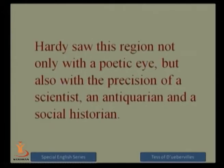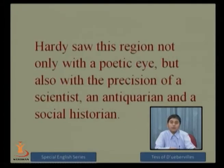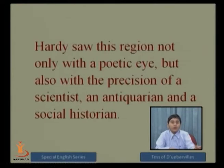Hardy showed this region not only with a poetic eye but also with the precision of a scientist, an antiquarian, and a social historian. These words show us the different points of view taken by Hardy. Whenever Hardy was writing about Wessex, he was not giving it equal treatment — sometimes his vision is like that of a social historian, in some novels like a scientist, and sometimes he becomes an antiquarian.